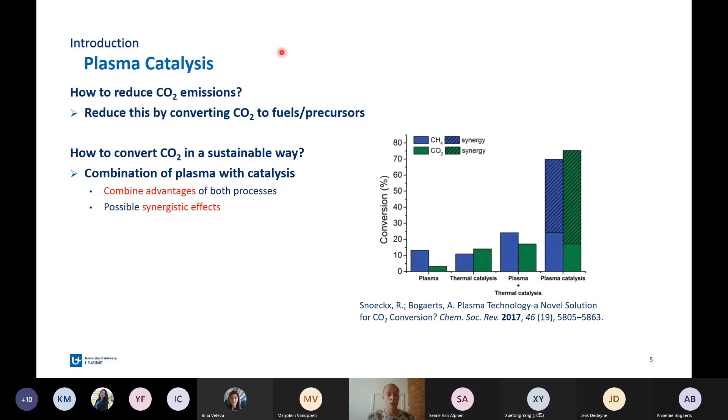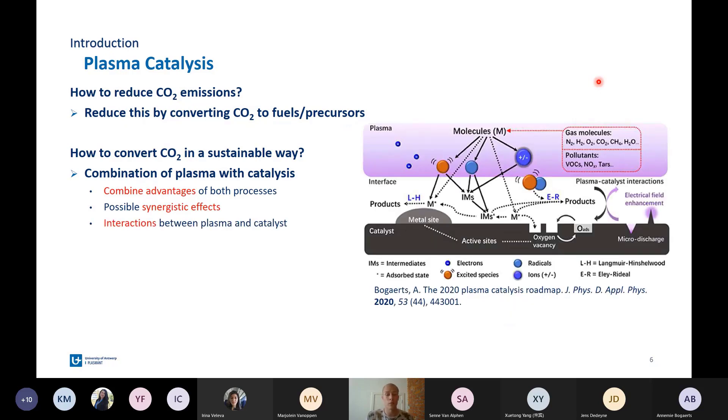Next to this, there is also the possible synergistic effect in plasma catalysis. This is depicted on the slide for dry reform of methane. You can see here the conversion reached by plasma alone, the conversion reached in thermal catalysis, and then the sum of these conversions, and the sum of these conversions is clearly lower than the conversion that is reached when you put the catalyst in the plasma. This synergistic effect is caused by interactions between the plasma and the catalyst.